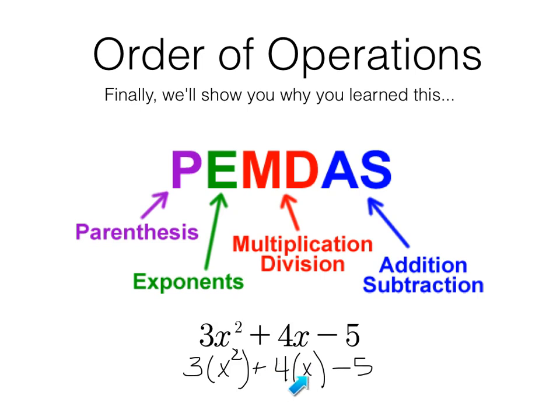We're adding 4x to that. So we multiply the 4 times the x before we add it, because we're adding 4x's. Not we're adding 4 and then we're multiplying by x. That's not what that's telling me to do. Finally, we take away 5. So the order of operations, the whole purpose is algebra. That's why we learn it.